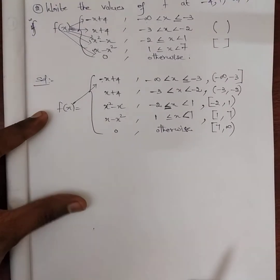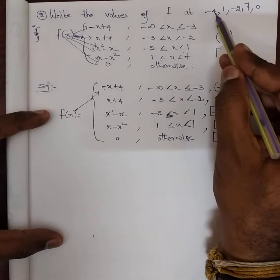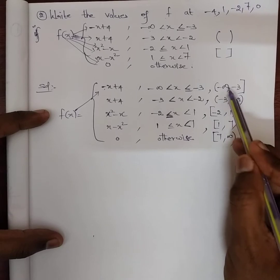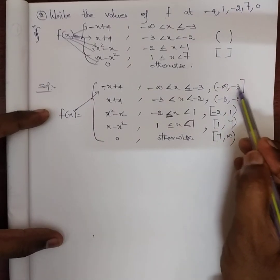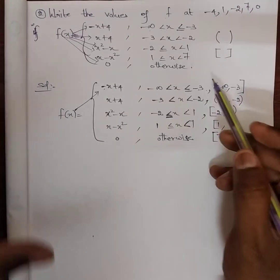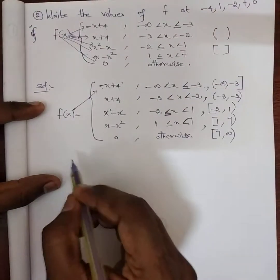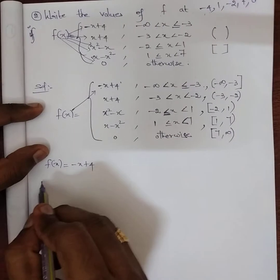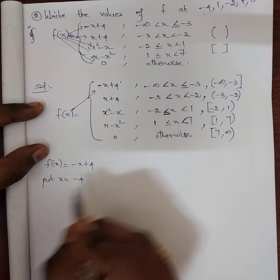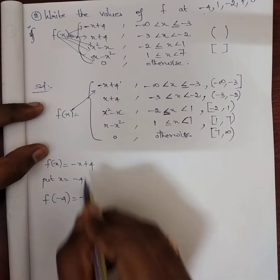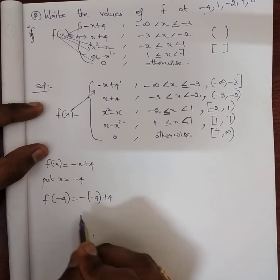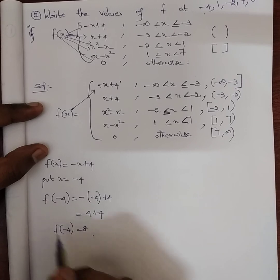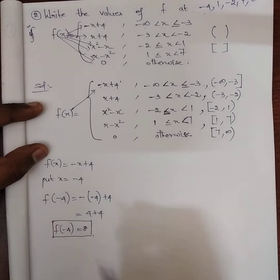Using this I can easily solve the sums. The first question is minus 4. I need to find f(-4). Where is minus 4 present? Here, minus infinity to minus 3 — minus 4 is present in this interval. So f(x) is equal to minus x plus 4. Put x equal to minus 4. Therefore f(-4) equals minus of minus 4 plus 4, which is minus times minus equals plus, so 4 plus 4 is 8. f(-4) equals 8. This is the first sum.